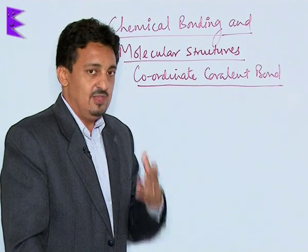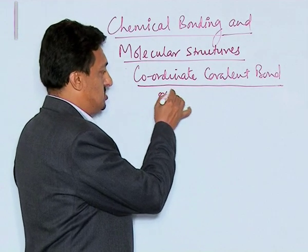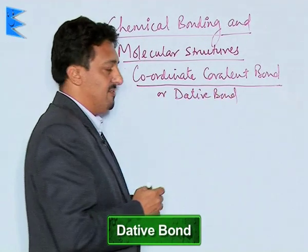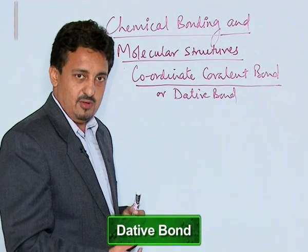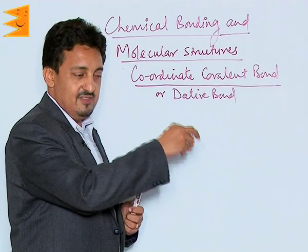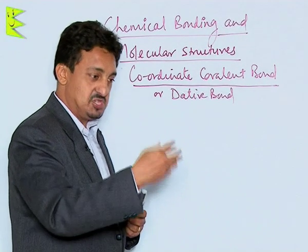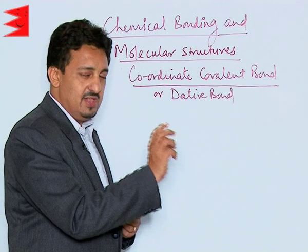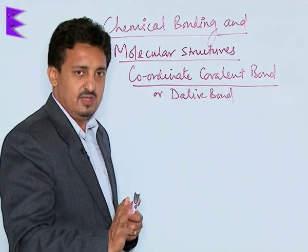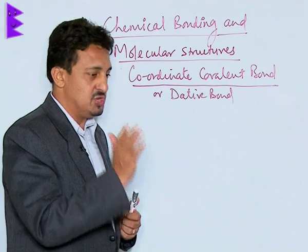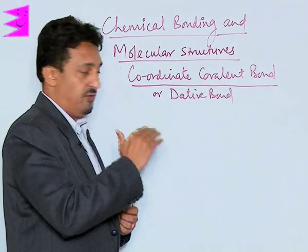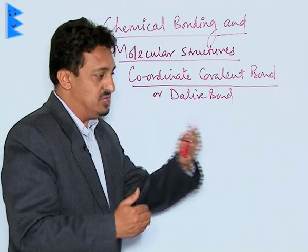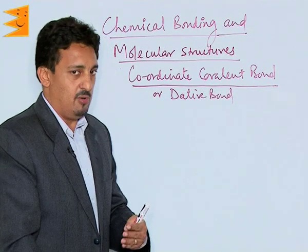This coordinate covalent bond is also called a dative bond, or a donor-acceptor bond. The donor is the atom giving its lone pair, and the acceptor is the one sharing that pair. Importantly, this coordinate covalent bond is actually a normal covalent bond after its formation — you cannot distinguish a normal covalent bond from a coordinate covalent bond once it is formed.